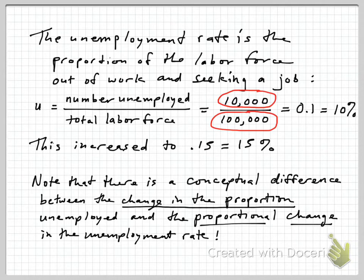So 10,000 over 100,000 is 0.1, and 0.1 of course translates in percent terms to 10%. And then we're just proposing that maybe this increased up to 0.15, or 15%, maybe we're up to 15,000 people unemployed out of the 100,000 in the labor force.